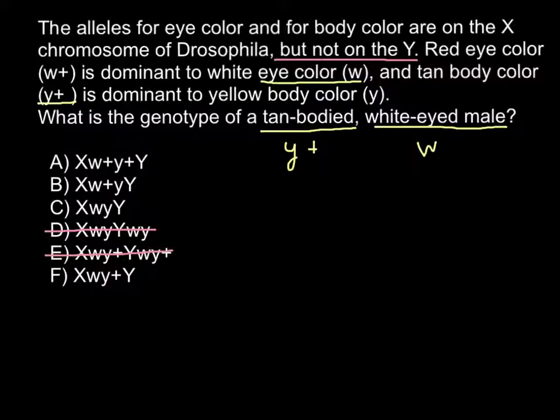So we're left with four answers, and let's now consider how we are going to solve them. So we have X chromosome and Y chromosome, and we have two alleles on the X chromosome. So one would be W, and another one would be Y+. So this is going to be the answer, and we have this answer, this is answer F.